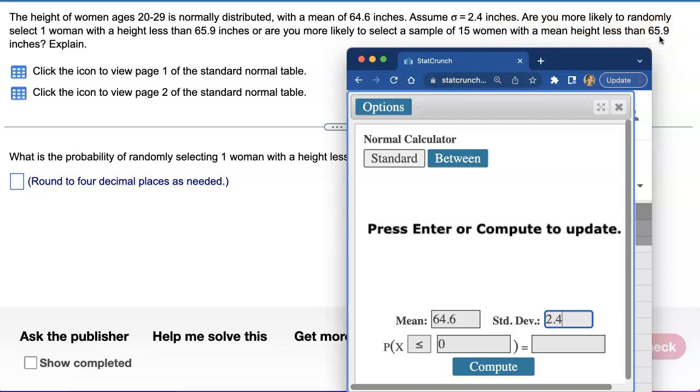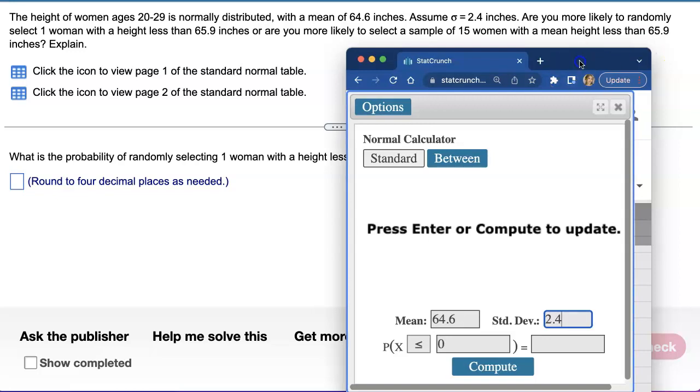So they're asking you for two different events and which one is more likely to happen. So what we're going to do is find the probability of each, compare those numbers and see which one is higher. Let's start with that first question.